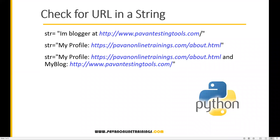Hi everyone, welcome. In this video I am going to show you how to check for a URL in a string. We'll have a few strings — the first contains a URL, the second has a profile URL, and the third has two URLs. What I want to do is extract those URLs from the string, whether there is one URL or multiple URLs.